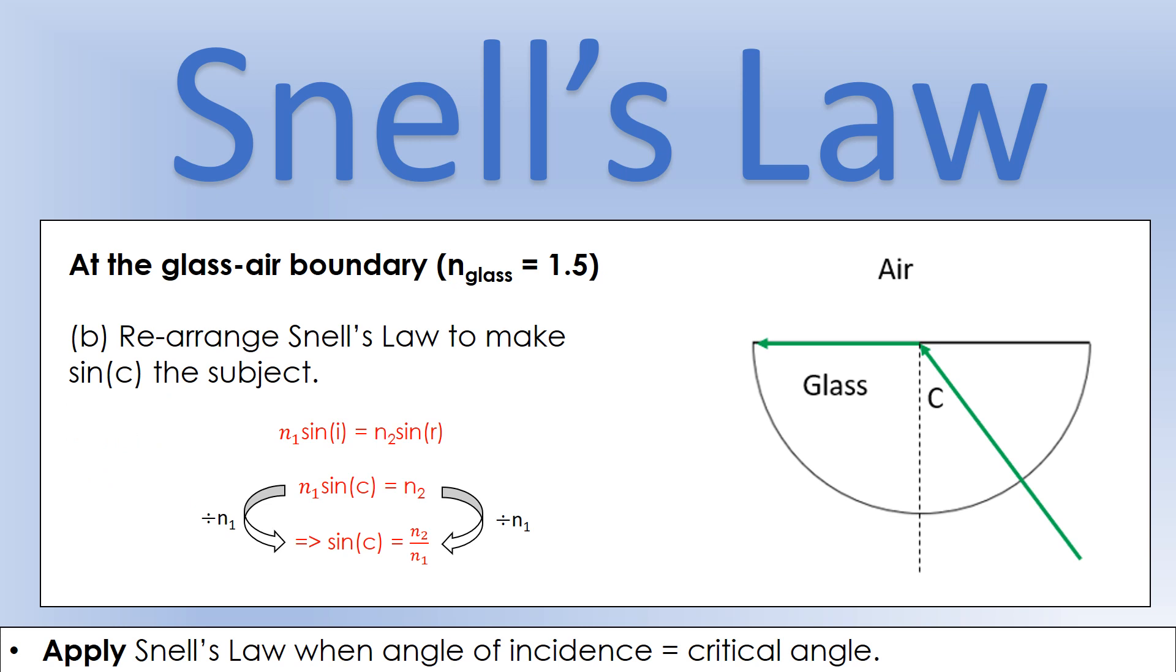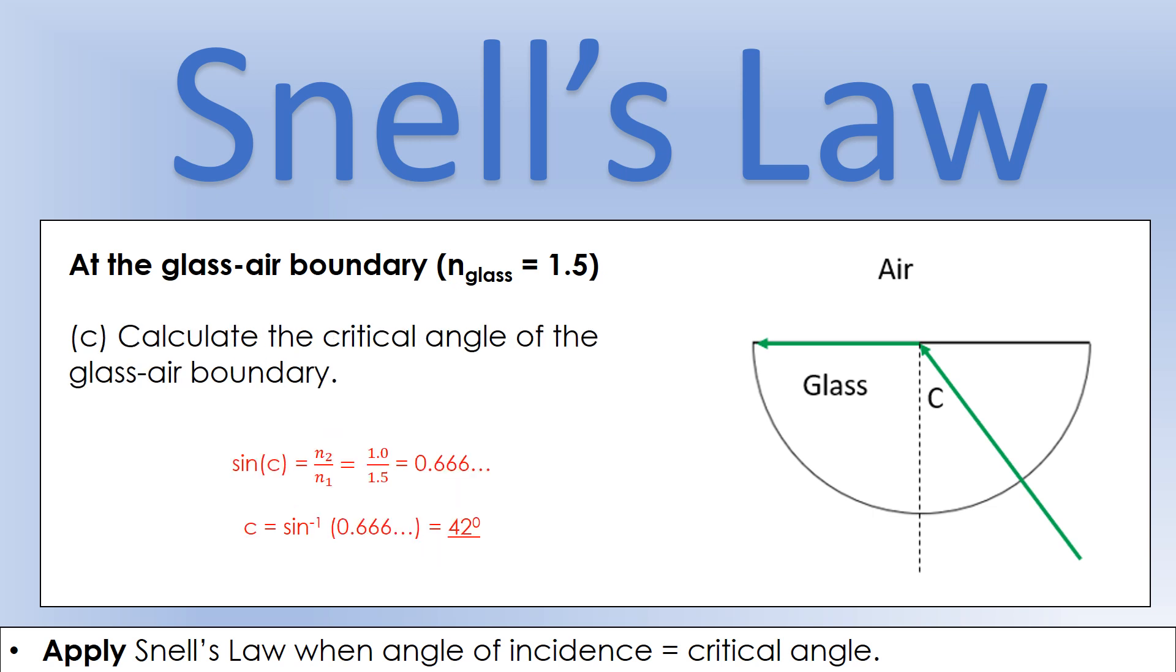We're going to make the sine of the angle of incidence, or in this case the sine of the critical angle, the subject. Sine r was 1, so that's dropped out in the first stage of working, and I've replaced sine r with sine c. Then I'm going to divide both sides by n1 to give us sine c as the subject of the equation.